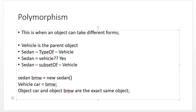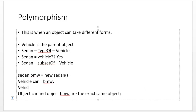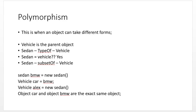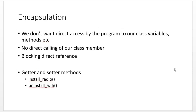Polymorphism refers to an object that can take different forms. You can also write: Vehicle alex = new Sedan(). This is legal because a sedan is a vehicle. What you've created is a new Sedan called alex, but referenced using the Vehicle class type. That is polymorphism.